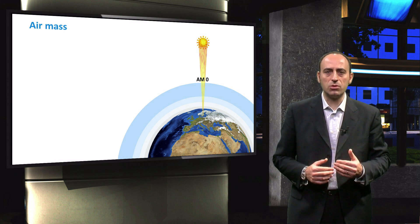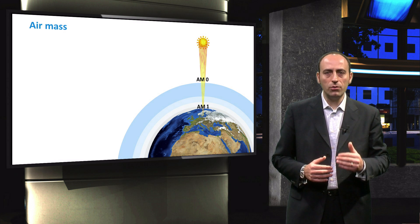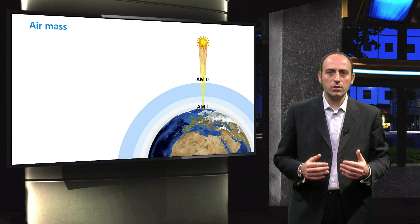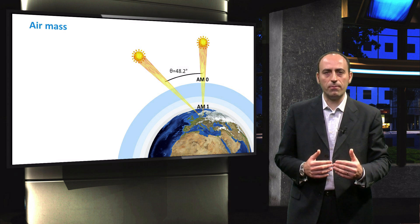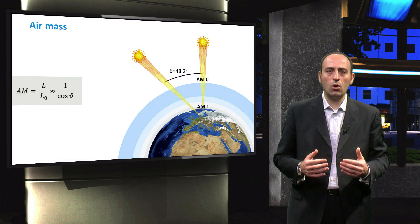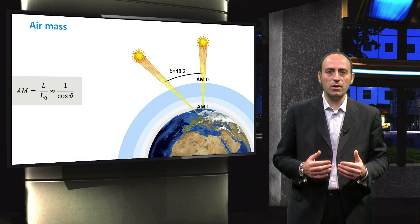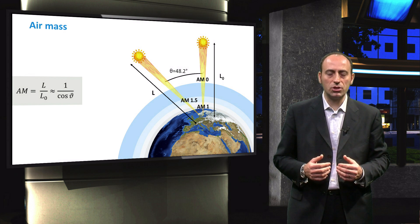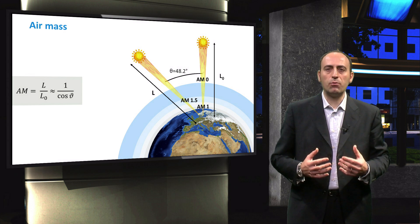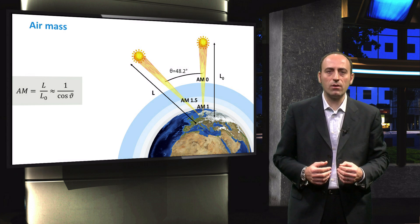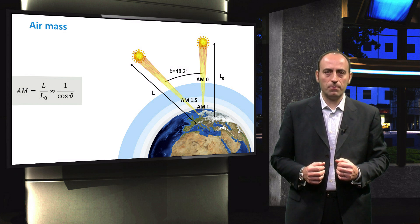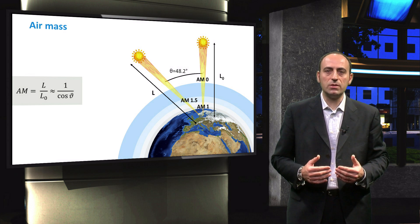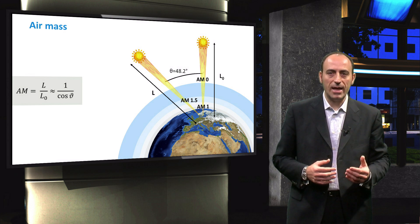Firstly, the AM0, obtained outside the atmosphere, and then the AM1, obtained on the Earth's surface. However, the Sun is not always perpendicular to the location, and thus light has to travel through the atmosphere for a longer path. The air mass is given by the ratio of the actual path length of sunlight through the atmosphere L, divided by its minimal distance L0, obtained when the Sun is perpendicular to the location. The air mass can also be expressed as 1 over the cosine of angle theta between the Sun and the zenith. Here the AM1.5 is depicted, also called the standard reference spectrum, since it is used to characterize cells at lab and industrial level. It is obtained when the Sun has an angle of about 48 degrees with the zenith.